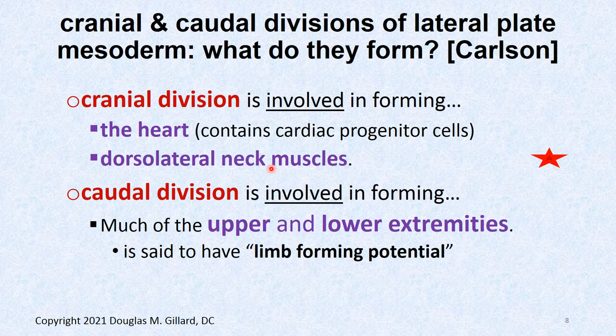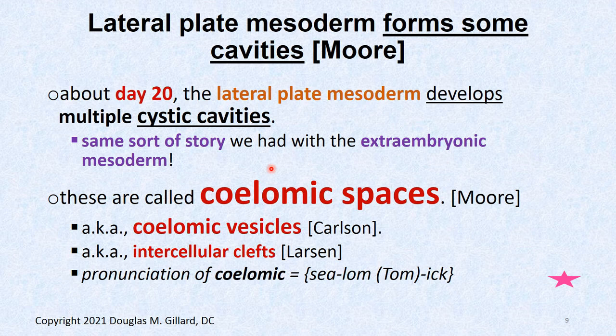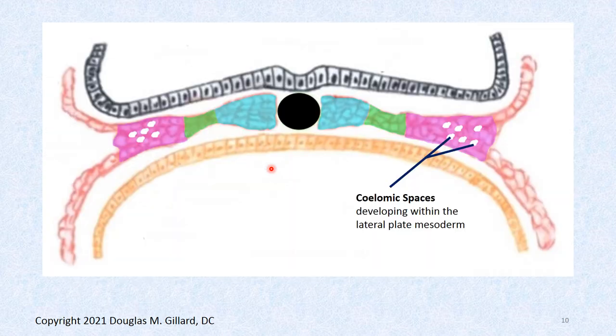Lateral plate mesoderm also forms some very important cavities. About day 20, the cavity story began. The mesoderm starts to get holes in it, very similar to how the extraembryonic mesoderm got holes that coalesced into one big cavity called the chorionic cavity. Here the same kind of story occurs — little holes form in the mesoderm, called coelomic spaces or coelomic vesicles. Langman calls them intercellular clefts; the chiropractic board book calls them coelomic spaces.